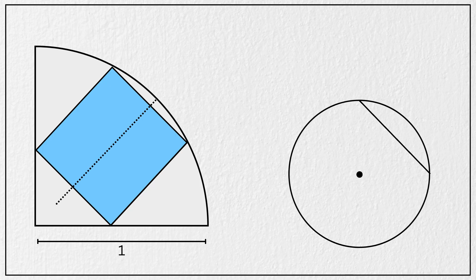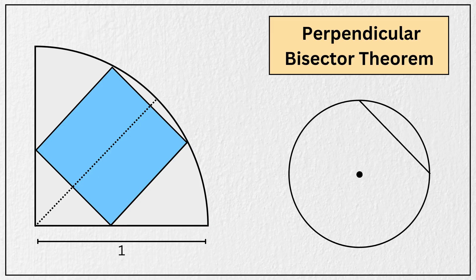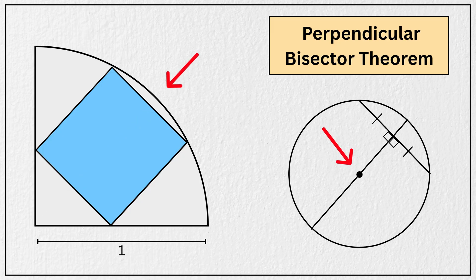Now imagine drawing the perpendicular bisector of this chord. According to the perpendicular bisector theorem, the perpendicular bisector of any chord in a circle always passes through the center of the circle. That means this line we just imagined passes right through the center of the quarter circle like this.